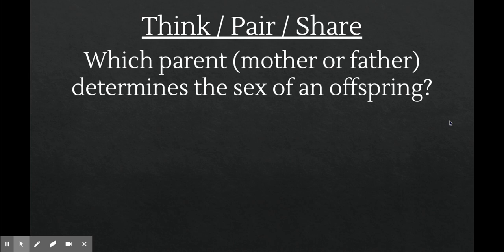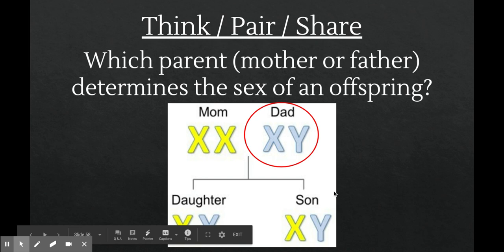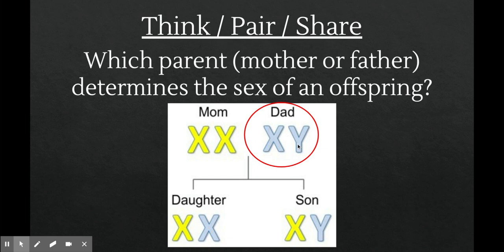Who is responsible for determining the sex of an offspring — is it the mother or the father? If you said father, you are correct. The mother, a female, has two X chromosomes and can only give X chromosomes to offspring. Whereas the father has an X and a Y chromosome, so there's a 50-50 chance the offspring gets an X — resulting in two X chromosomes and being female — or a Y chromosome, resulting in an X and a Y and being male. That's the basic genetic reason why our population is split about 50-50 between males and females.